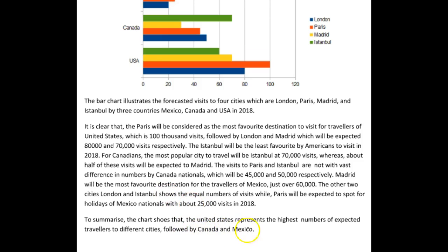To summarise, the chart shows that the United States represents the highest numbers expected to travel to different cities, followed by Canada and Mexico. Yes, but I would expect some more detail here, and this comma is unnecessary. So what we need to focus on is reducing errors. At the moment we're writing at about band 6 to 6.5, but you're going to want to be much higher. Pay particular attention to articles, prepositions, and pronouns, and grouping your information together in a more cohesive fashion. Identify groups and then talk about them in paragraphs — that will help you considerably.